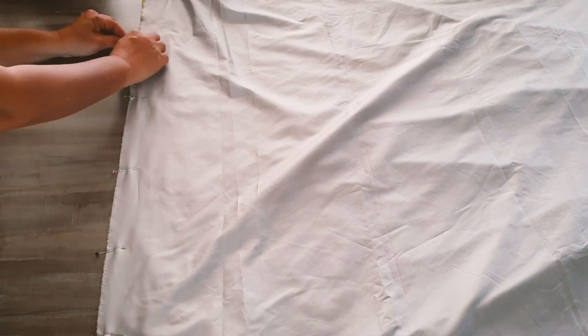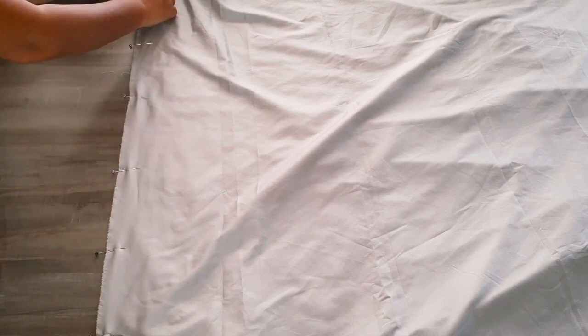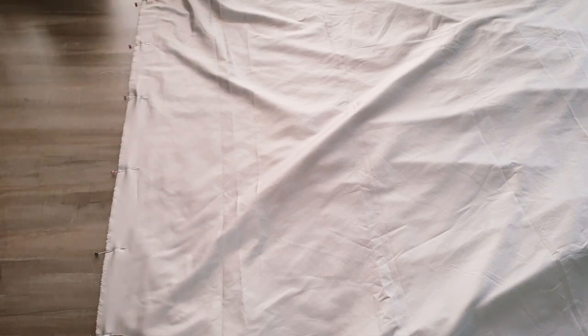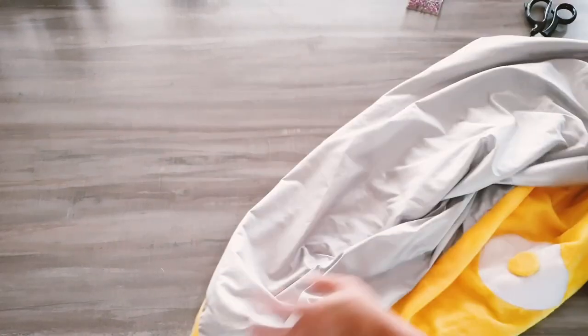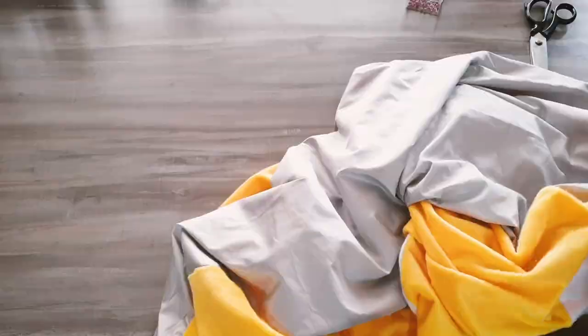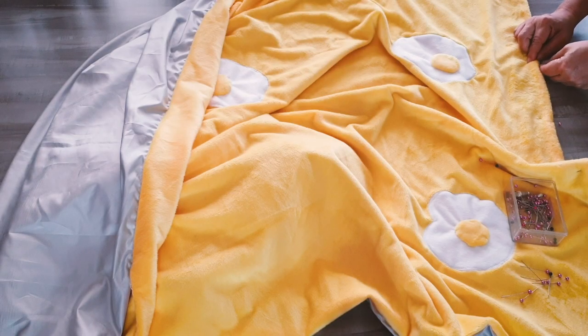I trim off all the excess backing fabric. After I flip the blanket out, I pin the seams together flat and then topstitch over them.